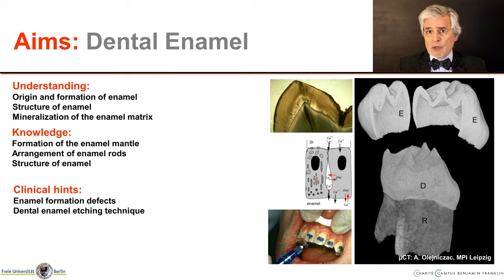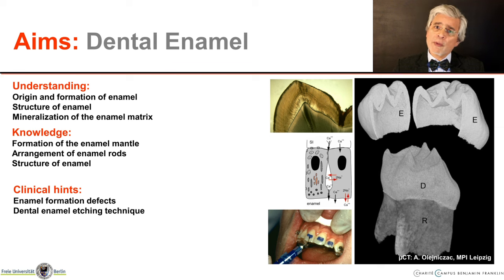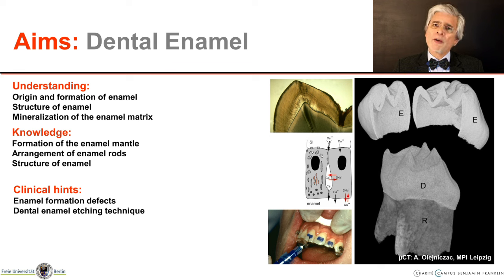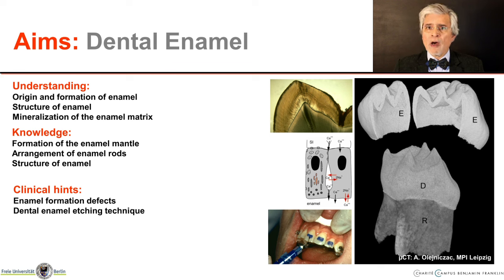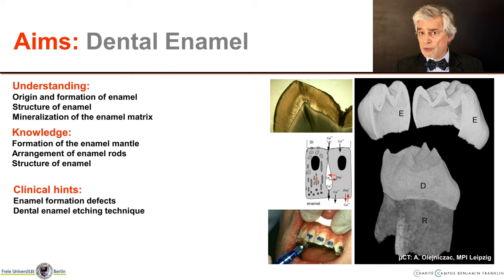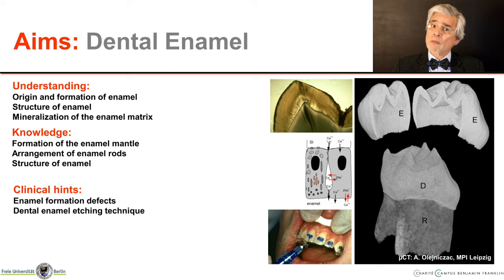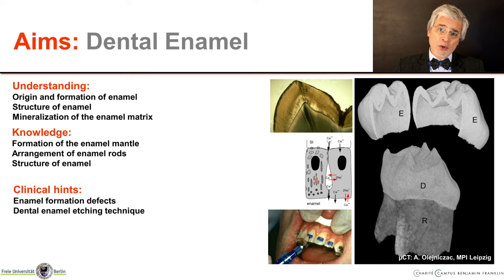As learning objectives, we want to create an understanding of the formation and special structure of dental enamel, and explain how mineralization takes place. At the end, you will also have knowledge of how the shape of the enamel mantle is created, whereby we pay particular attention to the internal structure of the enamel — the so-called enamel prisms. The structural characteristics of enamel are also closely related to the formative process, and these enamel prisms are ultimately the result of the mineralization of the enamel matrix. I will also give clinical hints about enamel formation errors, and the enamel etching technique — so important for patients — is only possible because enamel has this prism structure.